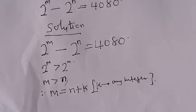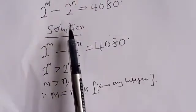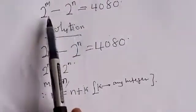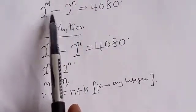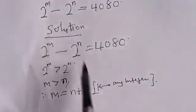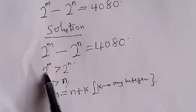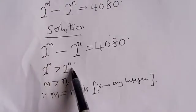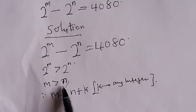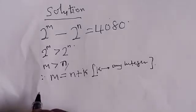Because we have 2 raised to power m minus 2 raised to power n, and 2 raised to power m is greater than 2 raised to power n — this is a minus and this is positive — so 2 raised to power m is greater than 2 raised to power n, which means m is greater than n. We now let m equal to n plus k, where k is any positive integer.